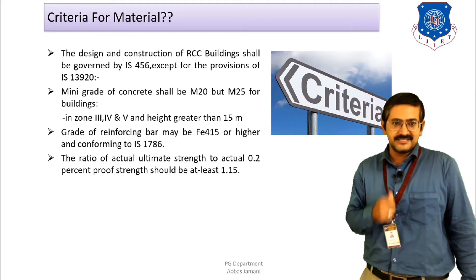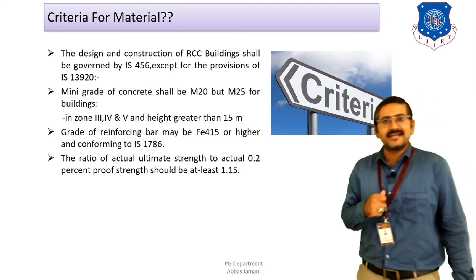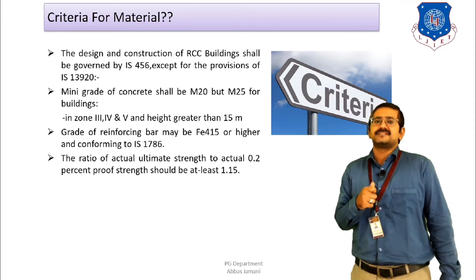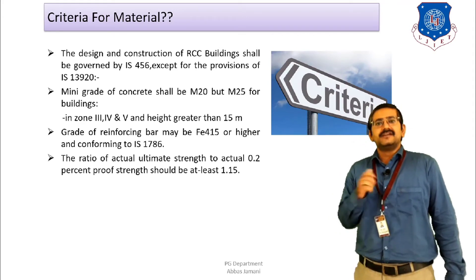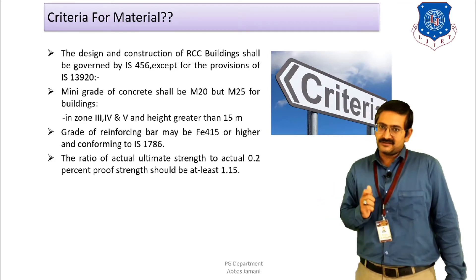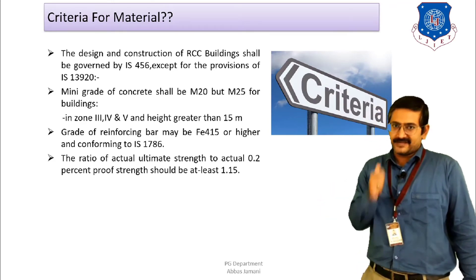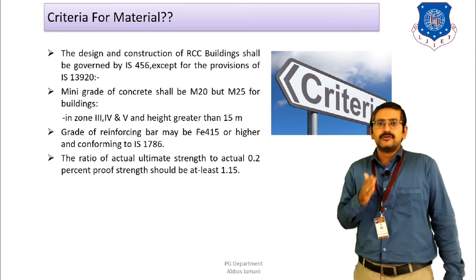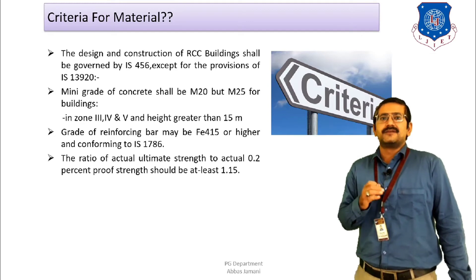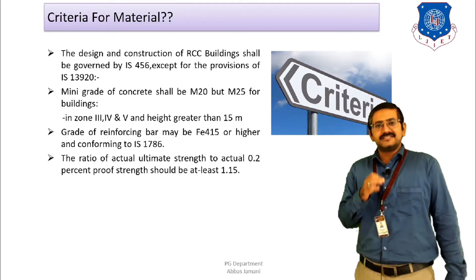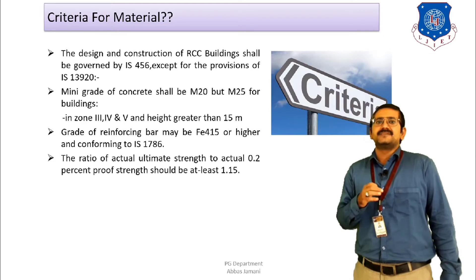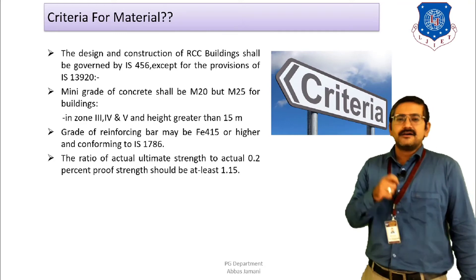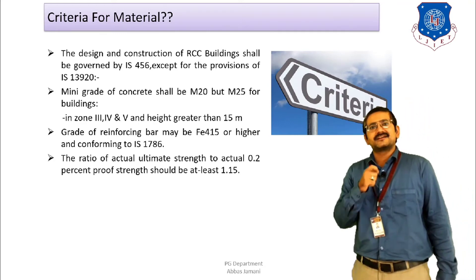Regarding reinforcement, the minimum grade of reinforcing bar should be Fe 415, though Fe 500 or Fe 550 can also be used. Additionally, the ratio of ultimate strength to the actual 0.2% proof strength should be at least 1.15. These are the criteria for selection of materials where ductile detailing is to be followed.